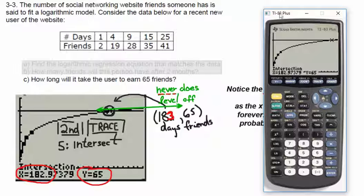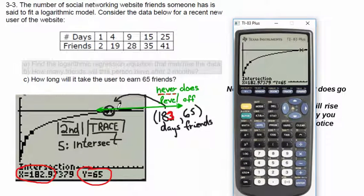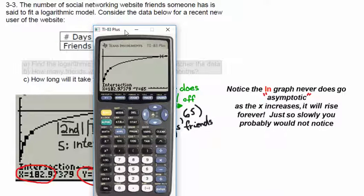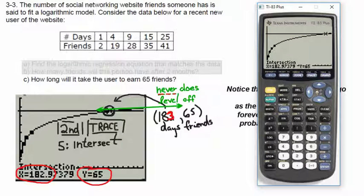That was pretty easy — it's the same crap over and over again. Notice the ln, the natural logarithm graph, never does go asymptotic. It never does level off. You will always get another friend — it might take six months to get one more. It just grows so slowly that you don't really notice. There's a perfect example of a logarithm.